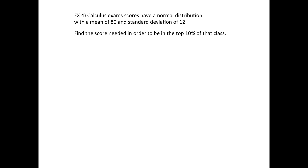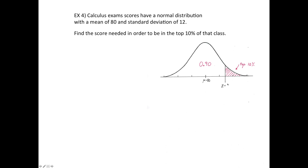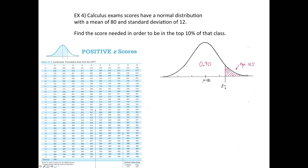Now here's a different type of example — we're going to work backwards. On the previous problems, you were given the score and found the percent. Now you're given the percent and need to find the score. Draw the picture: the mean equals 80 goes in the middle. We want the top 10%, which means the person beat 90% of others. We need to find the z-score by using the table in reverse — searching for what's closest to 90%, because 90% represents the left-side area of the graph.